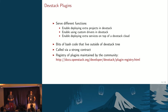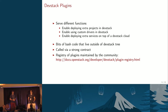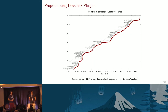So what is the plug-in in fact? It's several bits of bash code that live outside of the DevStack tree — maintained in a different project by the team responsible for it. It's called by DevStack via a strong contract. There is a registry of plug-ins maintained by the community, though it's not very up to date. The graph shows the actual plug-ins implemented since the beginning of the year. We have quite linear growth — basically linear except for at the summit.